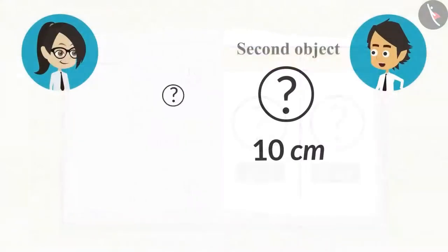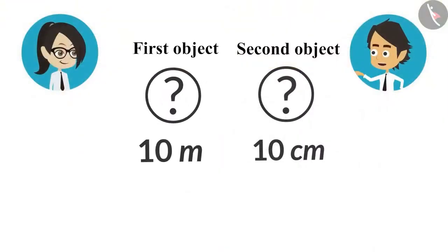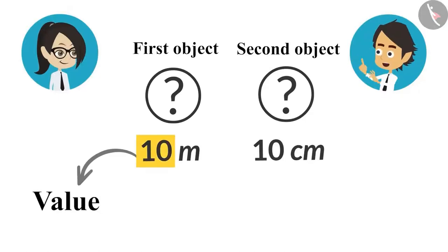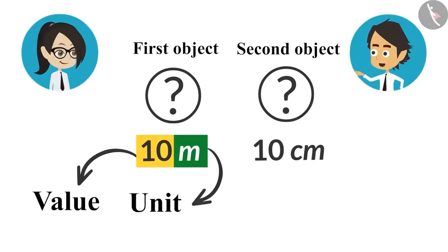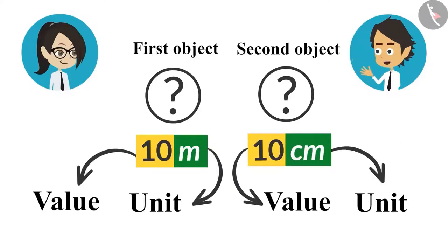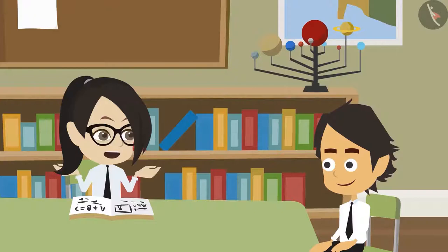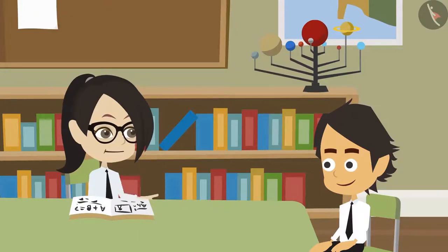For example, in this question, the length of the first object is given as 10 meters. This means that 10 is the value and meter is the unit. Both are important to find the length of any object. I did not understand. Tell me more.